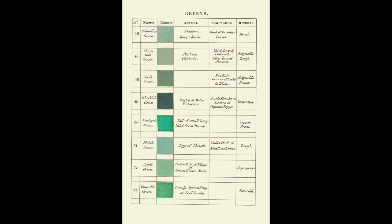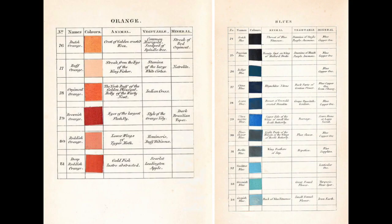Prussian Blue, for instance, could be located on the beauty spot of a mallard's wing or a piece of blue copper ore, so it's really gorgeous.